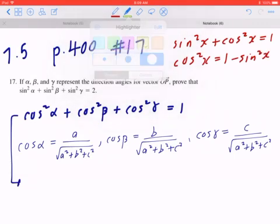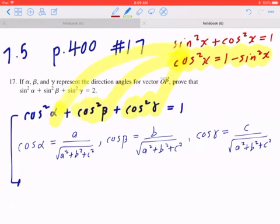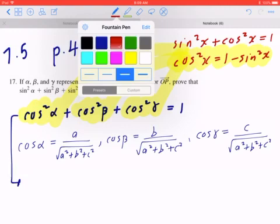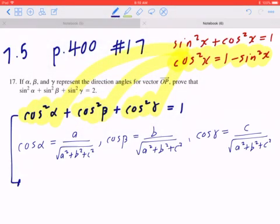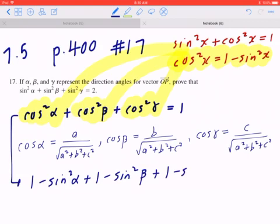So when we go back, take this idea and plug it into each case. So cos squared alpha becomes 1 minus sine squared alpha, cos squared beta becomes 1 minus sine squared beta, cos squared gamma equals to 1 minus sine squared gamma, and you can copy the right hand side, which equals to 1.